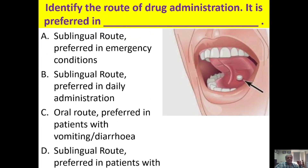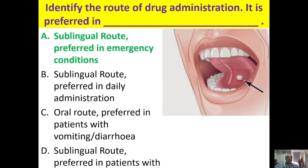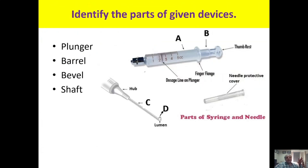One question is still remaining — identify the route of drug administration. The drug shown is kept below the tongue, so that is the sublingual route. It is used mainly in emergency conditions, such as sublingual nitrate in a case of acute angina attack. The correct option is A.